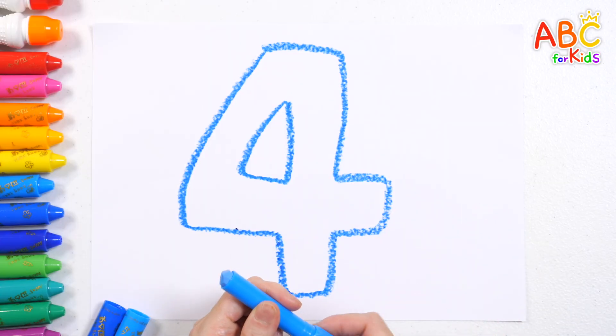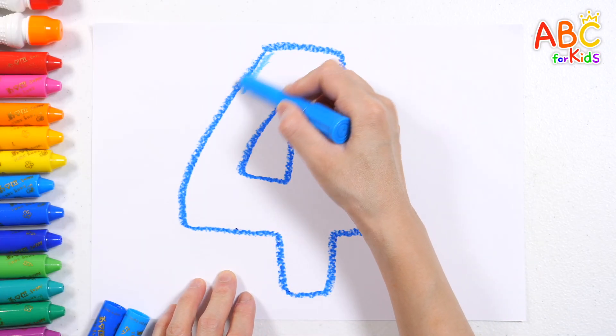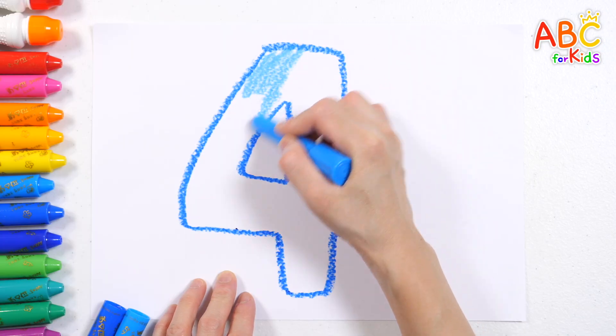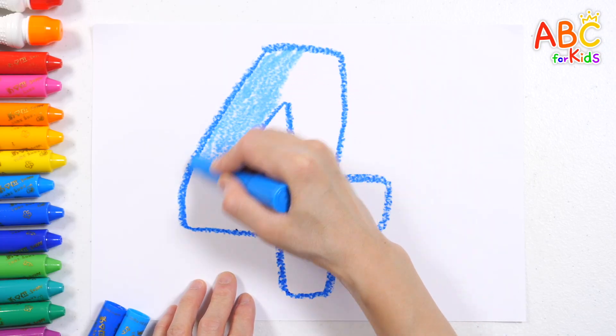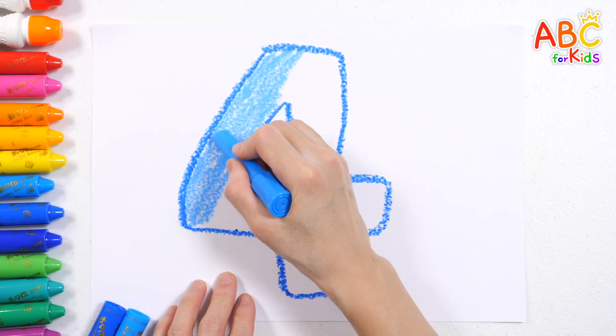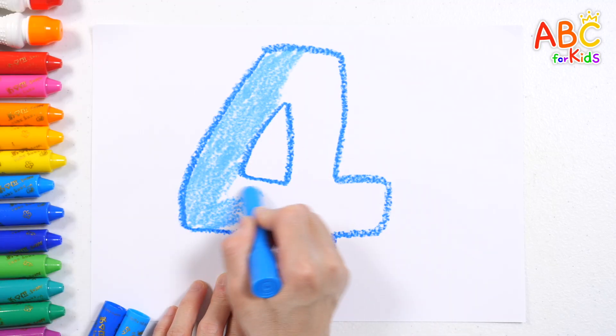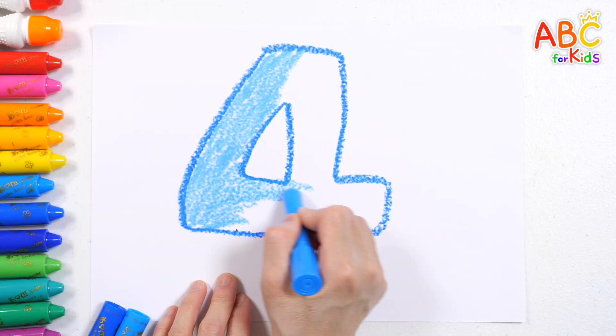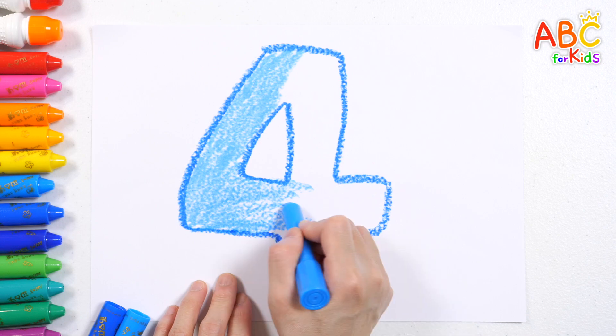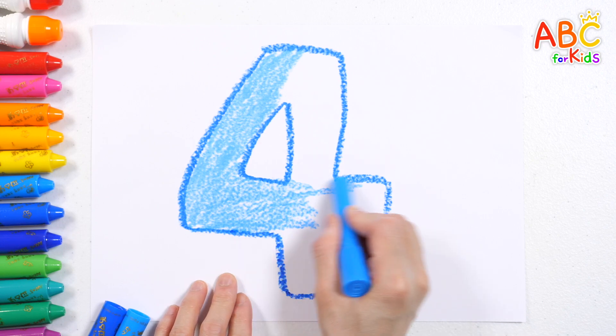Wow! Shall we color in number four? One, two, touch your nose, three, four, tap your toes, five, six, jump so high, seven, eight, reach the sky, nine, ten, spin around, sit back down upon the ground.